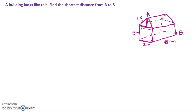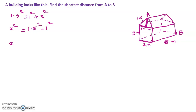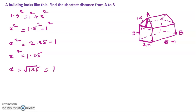Now this is 1 meter and here it is 1.5 meters. Now we can find out this length using the Pythagorean theorem: 1.5² = 1² + x², so x² = 1.5² − 1² = 2.25 − 1 = 1.25. Therefore x = √1.25 = 1.118 meters.